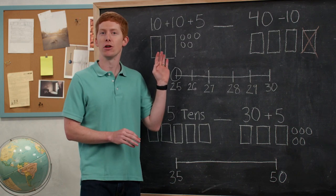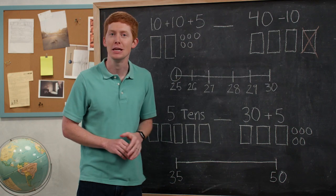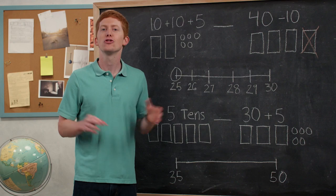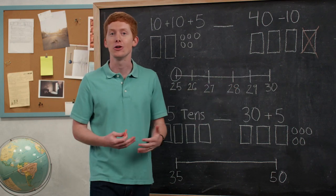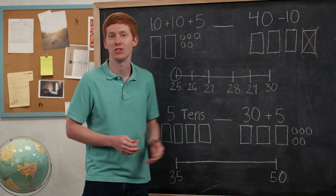Okay. So I had 25 on one side and I have 30 on the other side. So how do those compare? Well, I know that 30 is greater than 25. There was three groups of 10.